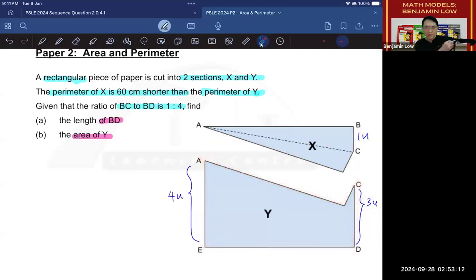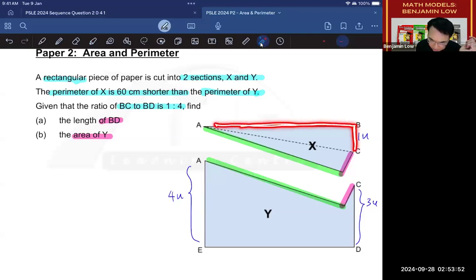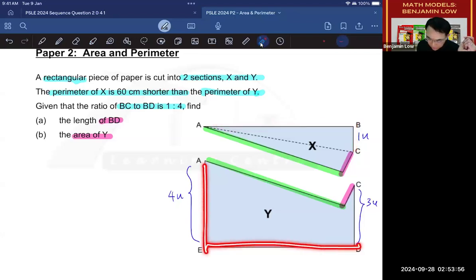So basically, what we can see is that some of the lines here are repeated. Okay, so what are the lines here that are repeated? The lines here that are repeated are this line, which is the equivalent of this line, and this line, which is the equivalent of this line. So basically, both X and Y have this part of their perimeter. This means that the difference of 60 must come from the sum or the total of this line as compared to the total of this line.